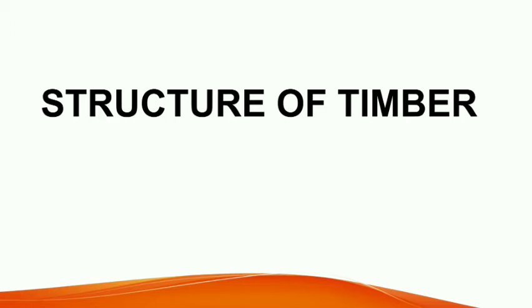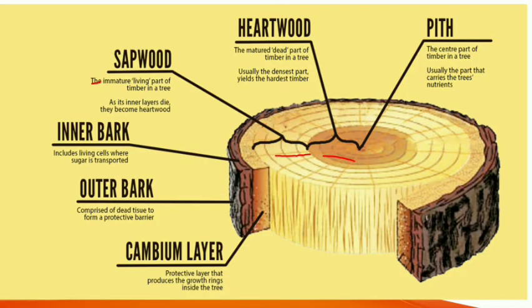Next is the structure of timber. This is the section of a timber. The innermost part is the pith. Surrounding the pith there is heartwood. Surrounding the heartwood there is sapwood. Surrounding the sapwood there is a cambium layer. And the outermost part is called the bark, which can be classified into the inner bark and outer bark.